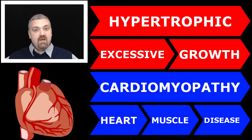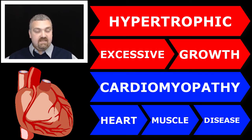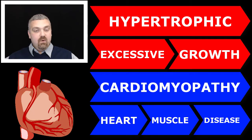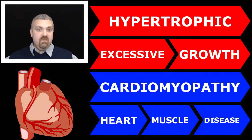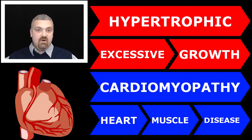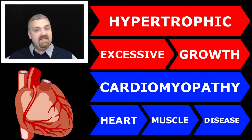We already mentioned hypertrophic cardiomyopathy — hypertrophic means excessive or a lot of growth; cardio means heart; myo means muscle; pathy means disease. This is a disease state where you have an enlarged heart. Your heart can get bigger with athletic training, but hypertrophic cardiomyopathy is a disease state where the heart is enlarging because of some defect — a hole in the heart, a valvular problem, these kinds of things.